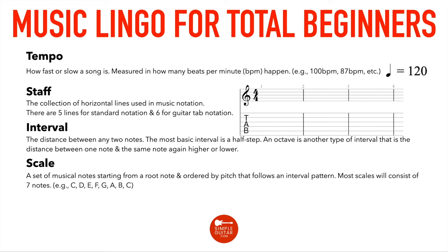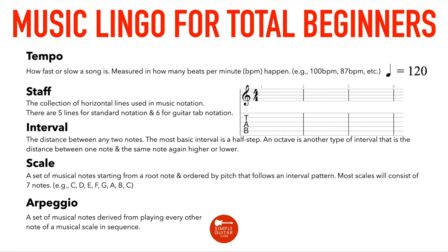Scales are really handy and we will talk a lot more about them. An arpeggio is a set of musical notes derived from playing every other note of a musical scale in sequence, one note at a time. For example, taking the C major scale and playing every other note: C, E, G, B, D, then going back down — that is an arpeggio.